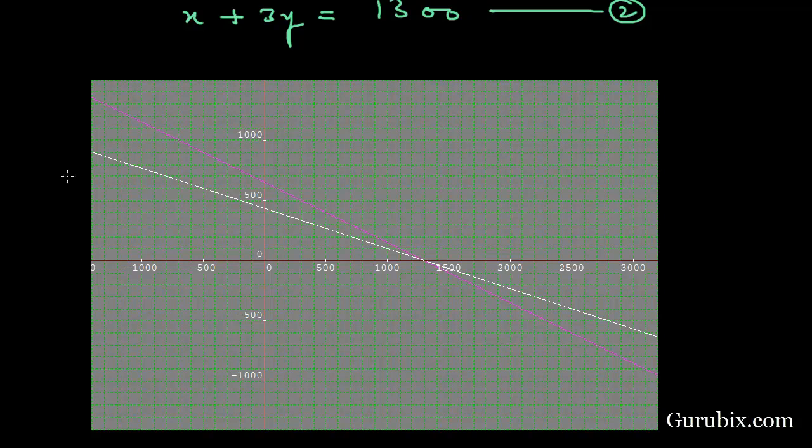then the graph is as follows. This is the line 3X plus 6Y equals Rs 3900, and this line is made from X plus 3Y equals Rs 1300.